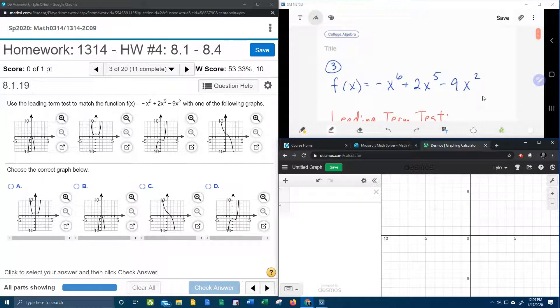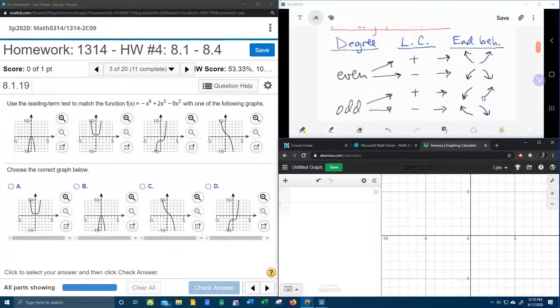All right, first thing we need is the degree. The degree is the biggest exponent on any variable, and so our degree is six, which is an even number. So we have an even degree.